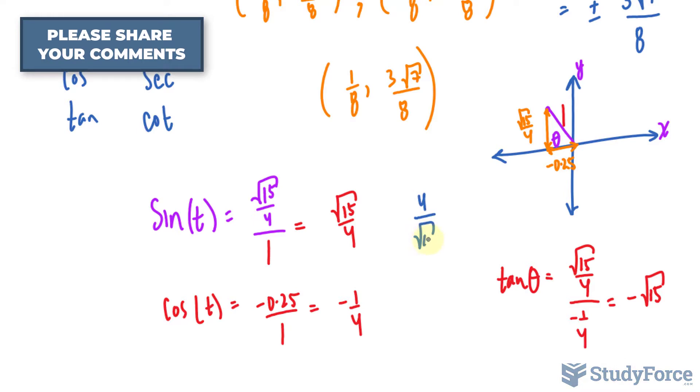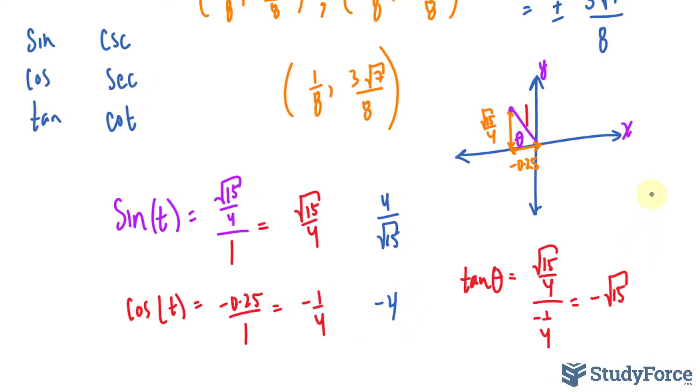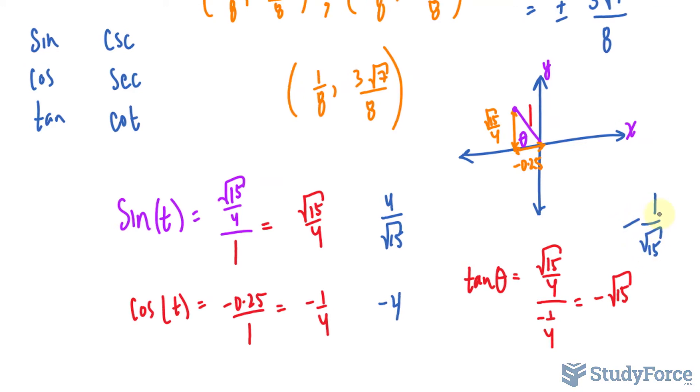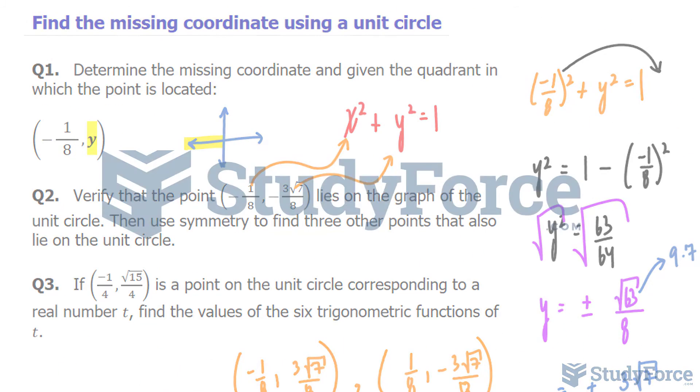You get 4 over the square root of 15 for cosecant. For secant, you get negative 4. And for cotangent, you get 1 over the square root of 15 and make sure that it's negative. And so there you have it. That is how to answer questions involving the unit circle.